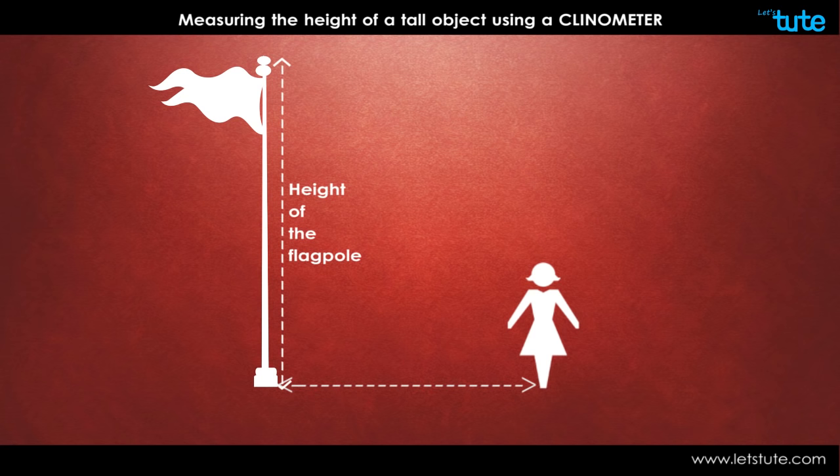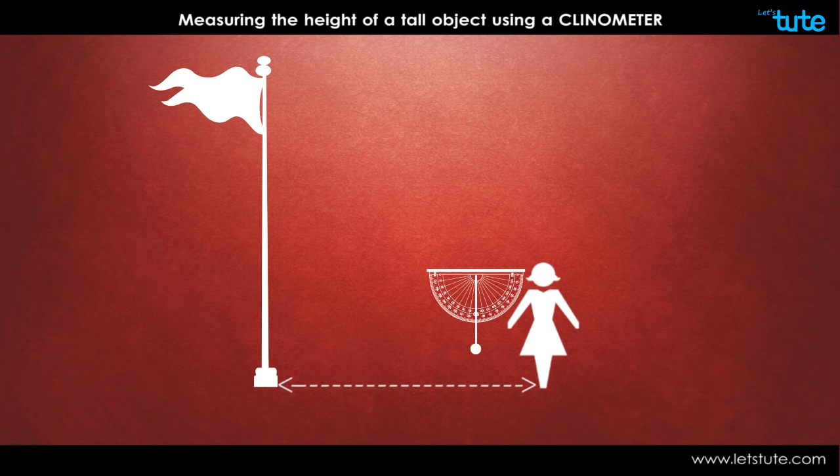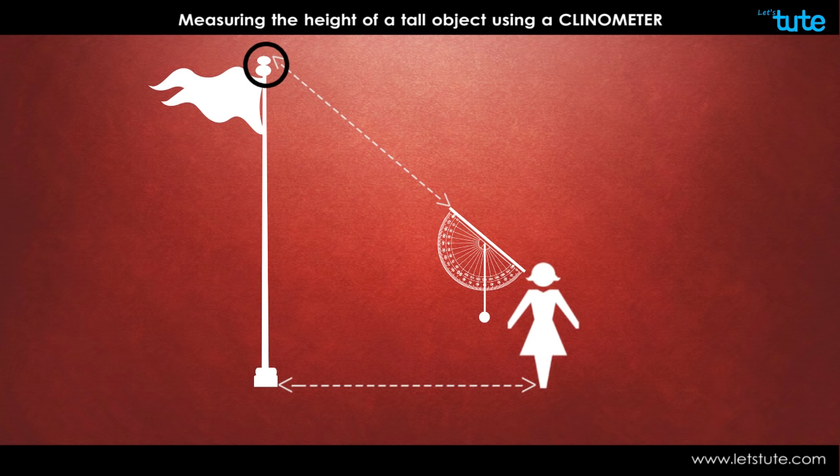Here I am going to measure the height of the flagpole. First, you take the clinometer in your hand and locate the end of the object. Once you have located the end of the object through the straw, let the clinometer stay steady.